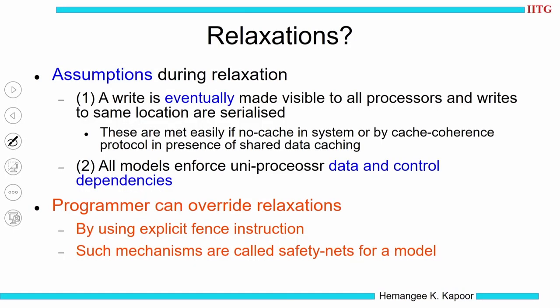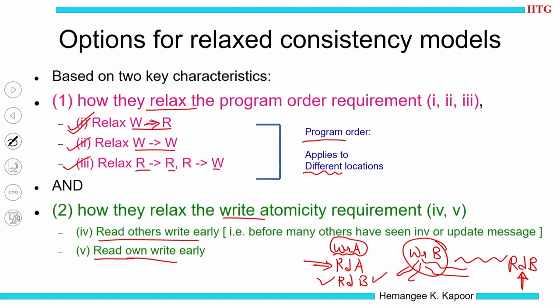While we do these relaxations, we need to guarantee certain assumptions. One is that a write will eventually be made visible. We are not saying that we do not care whether the write percolated — it does not mean that. It means that the far-off process should definitely get the value eventually, and we can conclude that coherence is definitely taking care of this.